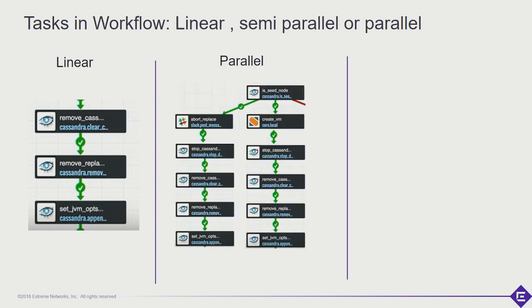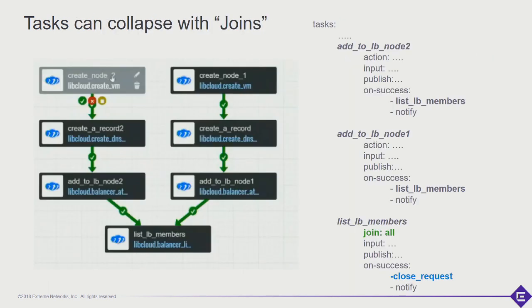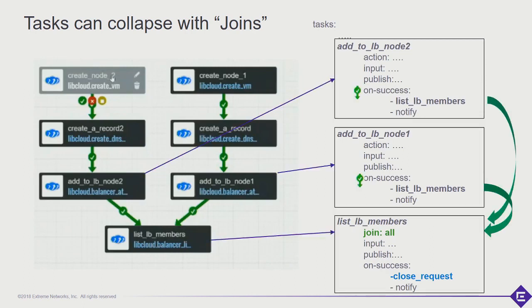You can have linear, parallel, or semi-parallel workflows. Linear is straightforward — if this then that. Parallel is useful when, for instance, you want to spin up 10 different VMs all with different logic. Semi-parallel allows you to merge them together at the end — do a join. The next slide shows the joins: you have two Cassandra nodes that you would use as load balancing nodes, then join them and close the request.